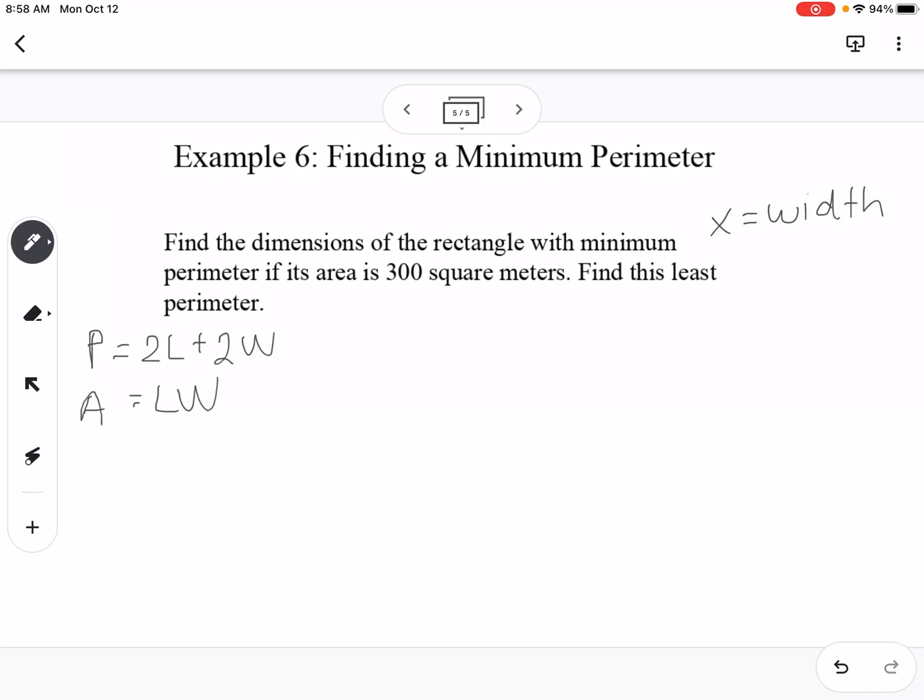So we're going to say that x is the width. So that means that if we use this 300 here, so we can say that 300 is equal to length times x. So our length would be equal to 300 divided by x. So what I'm going to do is I'm going to substitute this in for the length right here, and we're going to use x instead of w for our width.